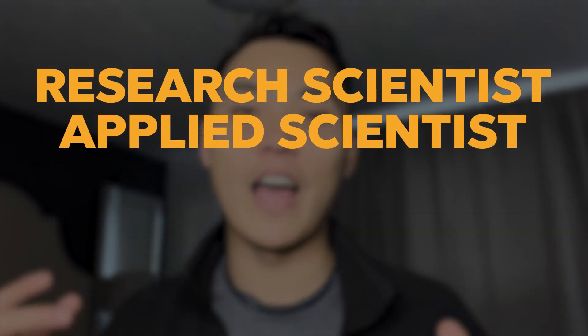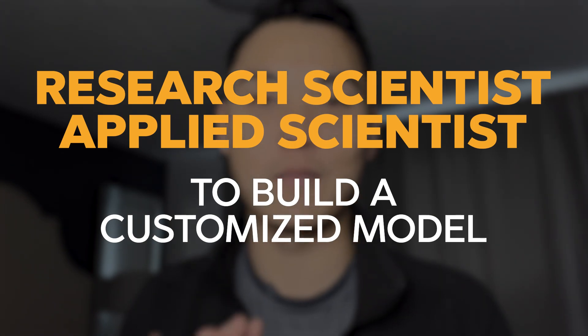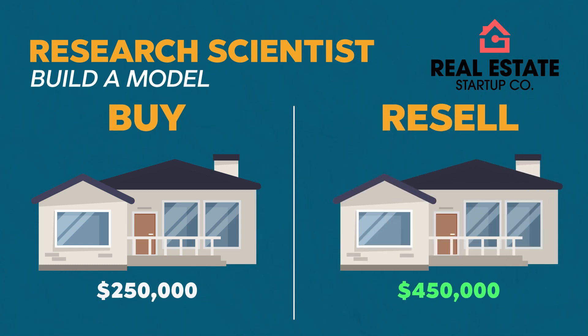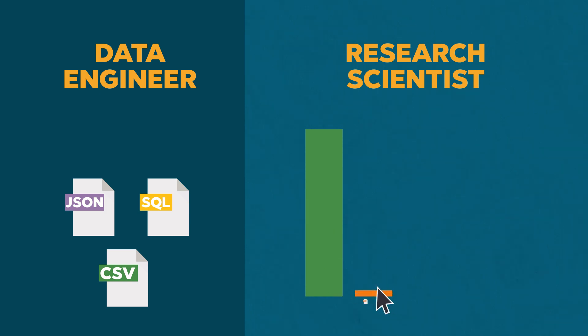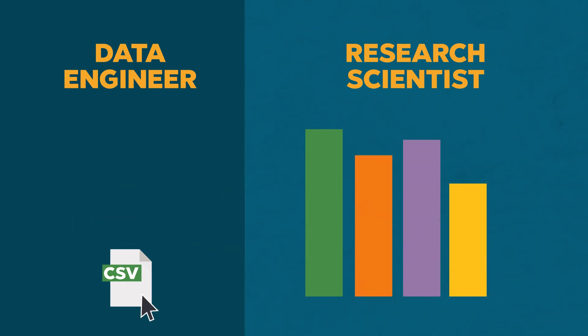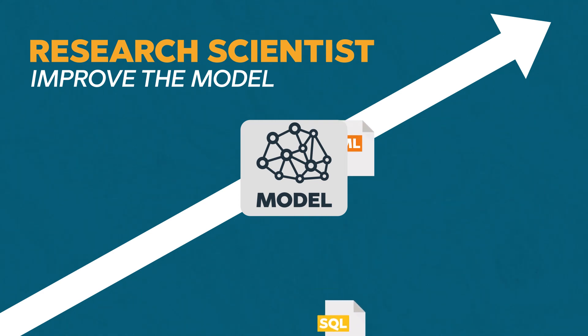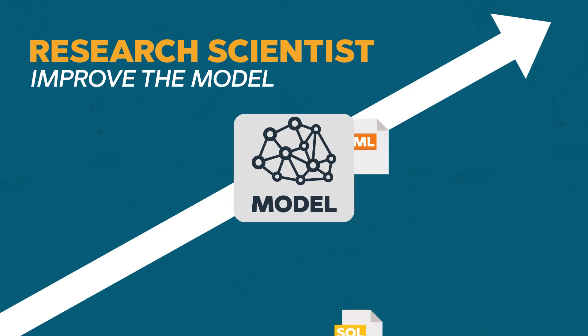Now let's say we have all this raw data — the data engineer has built the pipeline and it's in our system. Now it's time to hire an applied scientist or research scientist to build our customized model. This role is extremely important because we need a model that finds undervalued homes — even a 1% accuracy improvement could be tens of thousands of dollars of edge for the business. Applied and research scientists take existing data and transform it into thousands of different columns and data points to tune models for the best accuracy. Once they build the initial model version, they work with machine learning engineers to get it deployed and continue improving it over time.